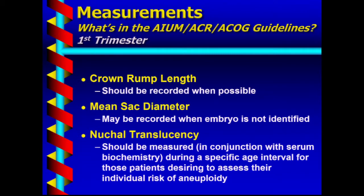These are taken directly from the guidelines of these societies. They're saying that the nuchal translucency is to be measured with two important considerations: one, it should be measured in conjunction with serum biochemistry — maternal serum blood tests — and two, it should be used in those women who wish to know their individual risk of aneuploidy. That's what the guidelines say.